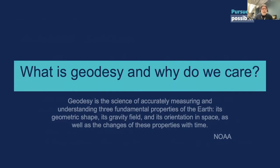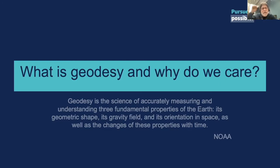I'm going to get started with a section called 'What is Geodesy and Why Do We Care?' Geodesy is the science of accurately measuring and understanding three fundamental properties of the Earth: its geometric shape, its gravity field, and its orientation in space, as well as the changes in those properties over time. This definition is from NOAA. Basically, geodesy helps us locate positions on the Earth and spatially define areas, making sure that information is easily shared with other users so we can incorporate data from various sources and have it all line up.